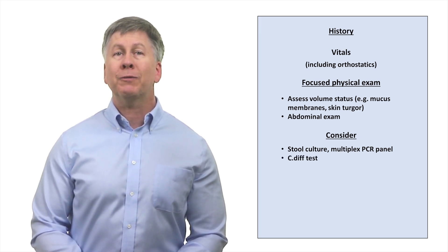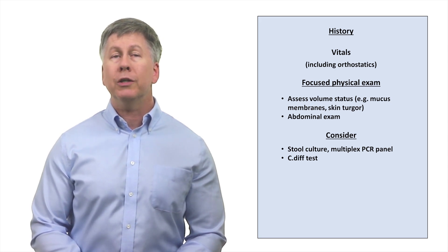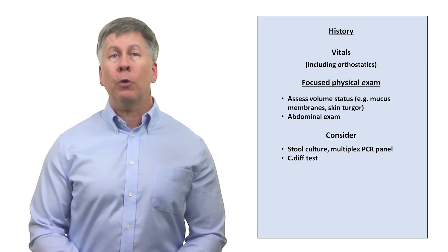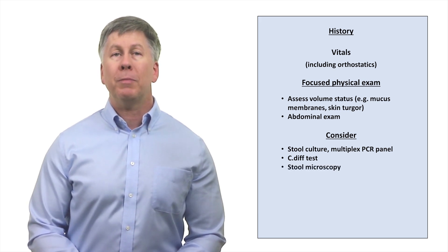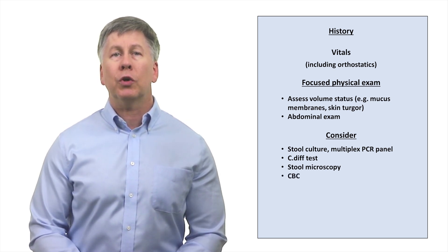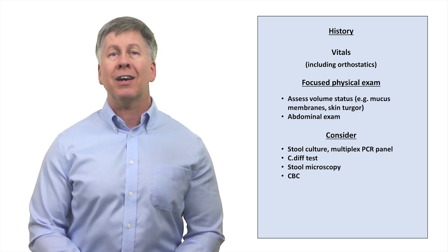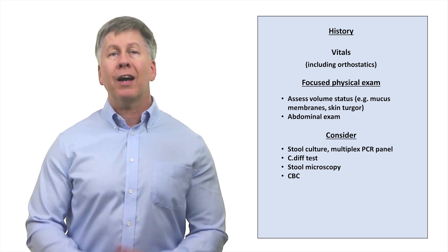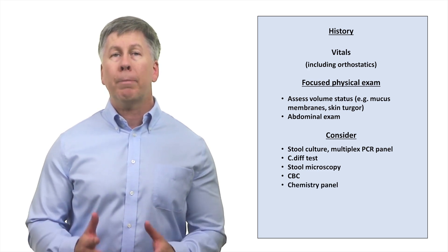Test for C. diff if the patient has risk factors for this. Different healthcare systems have different options for C. diff testing, including the possible inclusion of C. diff on the multiplex panel. In some situations of bloody diarrhea, particularly where a multiplex panel is not available, there may be utility in using stool microscopy to look for Entamoeba. In patients with severe bloody diarrhea, a CBC can be helpful to ensure a patient is not developing significant anemia, as well as to look for thrombocytopenia that can be a sign of E. coli-associated hemolytic uremic syndrome. And in patients with unusually high-volume diarrhea, a chemistry panel can look for associated electrolyte imbalances, particularly hypokalemia.